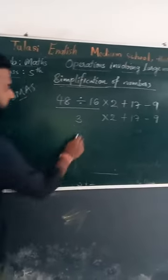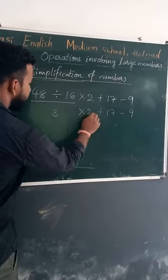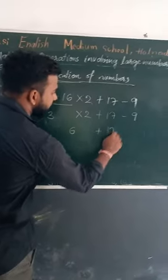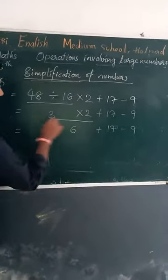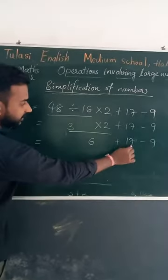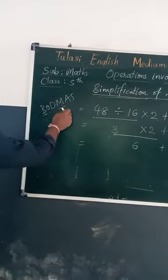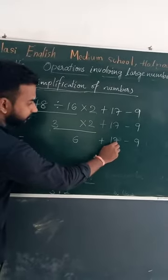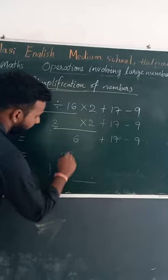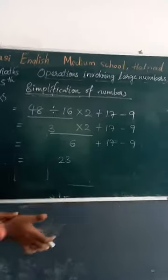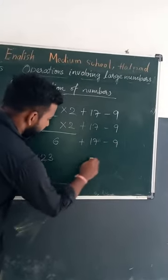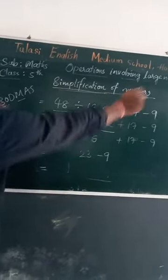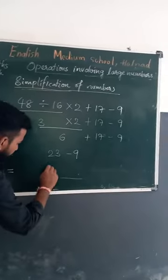Next multiplication: 3 into 2 equals 6. Plus 17 as it is, minus 9 as it is. After multiplication, next is addition — not subtraction, addition comes first. 6 plus 17 equals 23. Then 23 minus 9. The answer is 14.